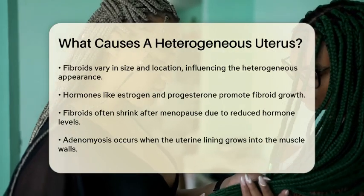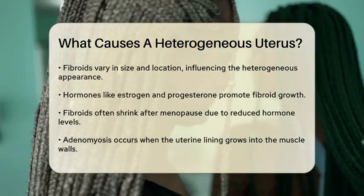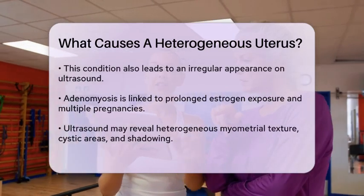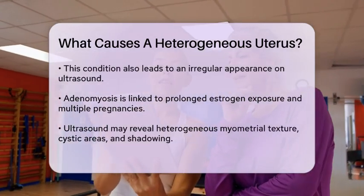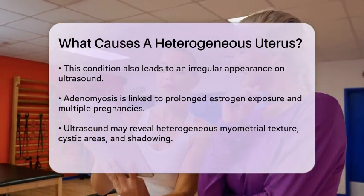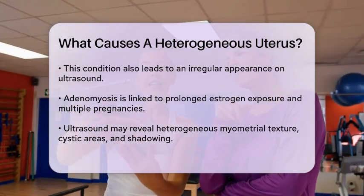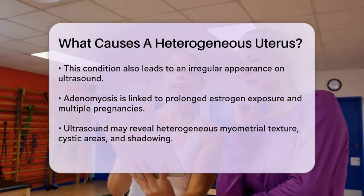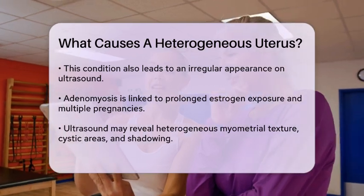When an ultrasound is performed, a heterogeneous uterus might show various characteristics. For instance, the myometrial texture can appear heterogeneous due to cystic areas, hyperechogenicities, or shadowing. The lesion can be localized or diffuse, and its location, size, and shape are carefully noted to understand the extent of the condition.